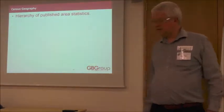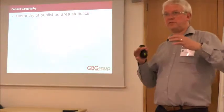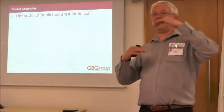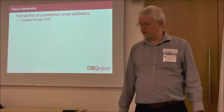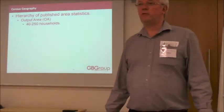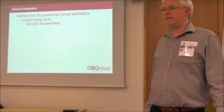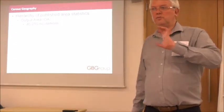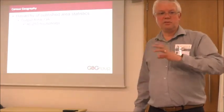Census geography is a hierarchy of published area statistics. When the census is collected, it is aggregated and published at various levels of geography — typically counts and percentages at different levels. The smallest unit it's published at is an output area, which is typically 40 to 250 households. The guidance from ONS is that 125 is optimal, but they are deliberately chosen for homogeneity, so that local and health authorities using this data to plan services know it's reasonably accurate and reliable.